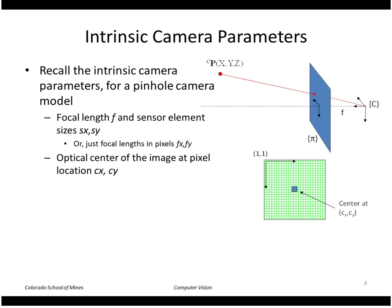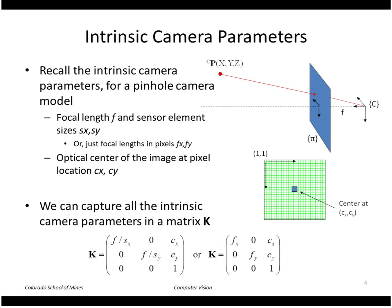First, let's model the intrinsic camera parameters. Intrinsic camera parameters include the focal length f — the distance from the center of the camera to the image plane — and the sensor element sizes, or equivalently the focal length in pixels FX and FY. We also need the optical center of the image: the pixel location where the optical axis pierces the image plane. All this information goes into a matrix K, with focal length divided by SX, focal length divided by SY, and center CX and CY. Typically we express focal length directly in pixels on the diagonal elements.